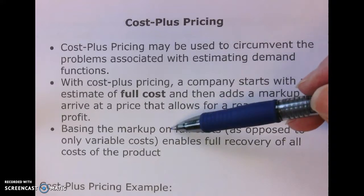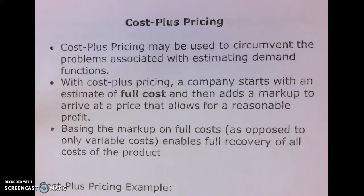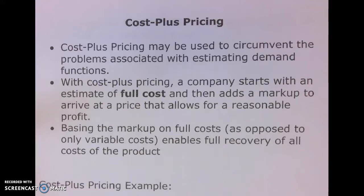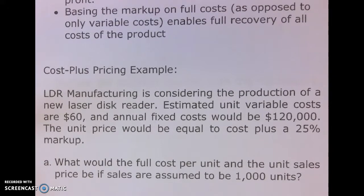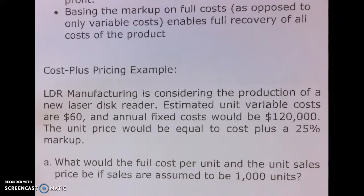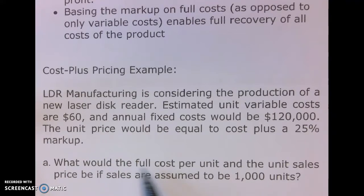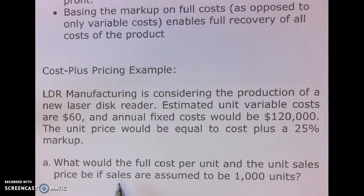Basing the markup on full cost — rather than just variable cost — lets us recover all of our costs, which is of course what we want to do. Looking at our example, LDR Manufacturing is thinking about producing a new laser disc grid. Estimated unit variable costs are $60, annual fixed costs are $120,000, and we'll apply a 25% markup to full cost to find the unit sales price, assuming we sell 1,000 units.